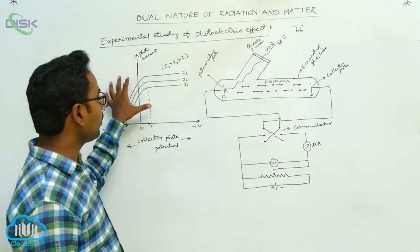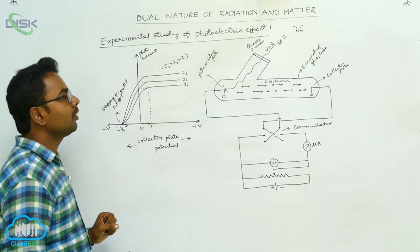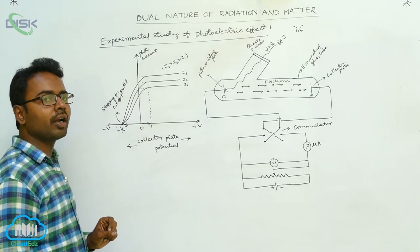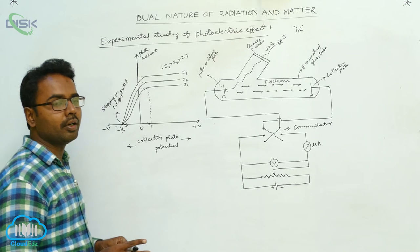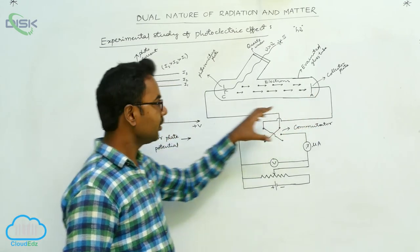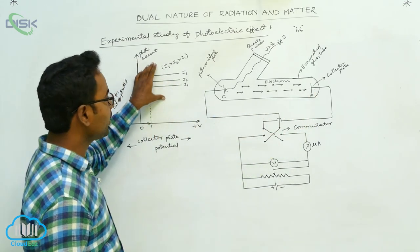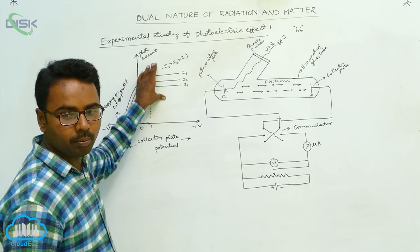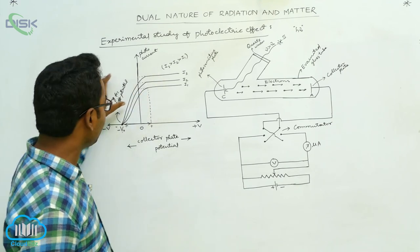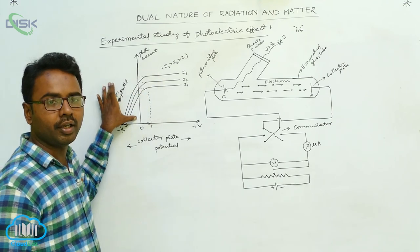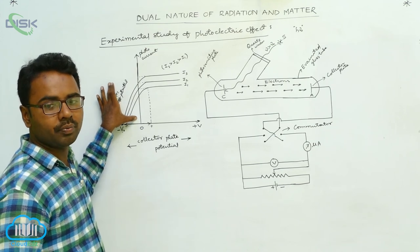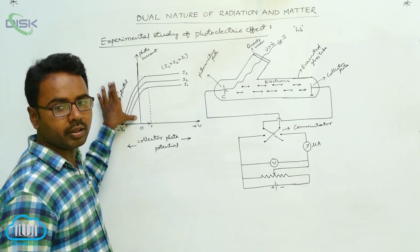This graph shows the variation of photocurrent with the applied voltage to the collector plate. On one side, it shows the variation of photocurrent with positive voltage to the collector plate, and on the other side, it shows the variation of photocurrent with negative voltage of the collector plate.